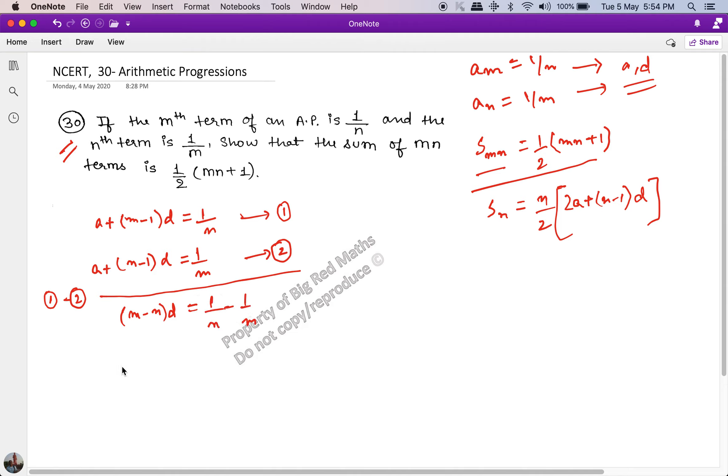So I get (m minus n) into d is equal to 1 upon n minus 1 upon m. And on solving this further, what I get here is (m minus n) multiplied by d is equal to (m minus n) divided by m multiplied by n.